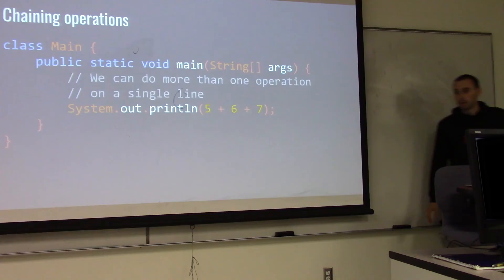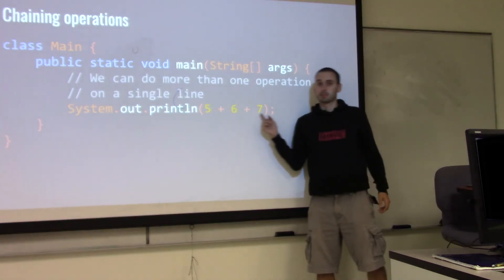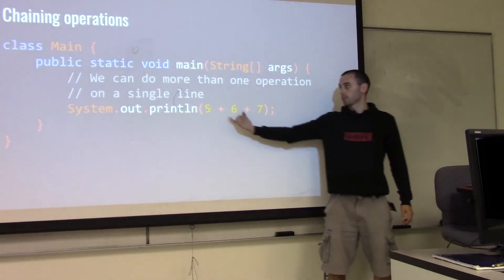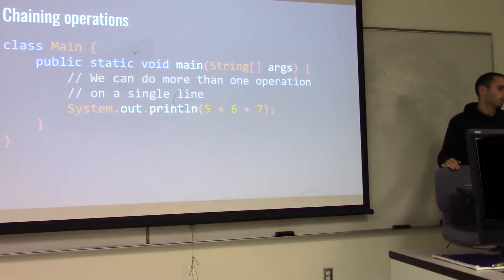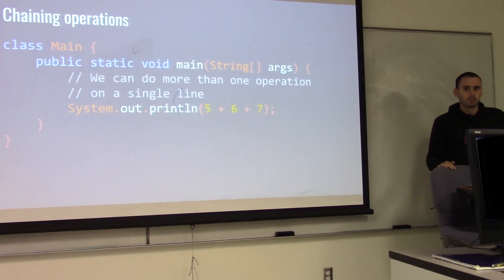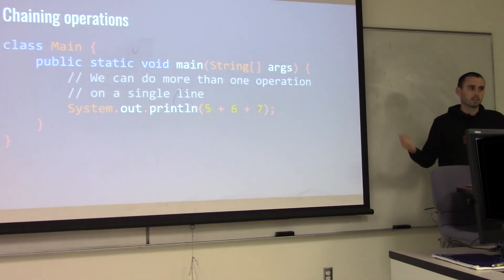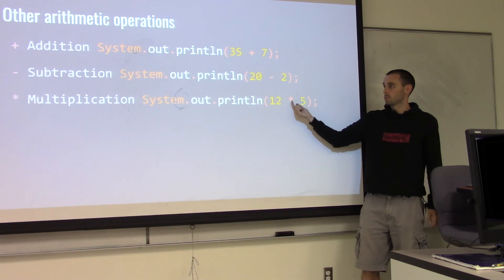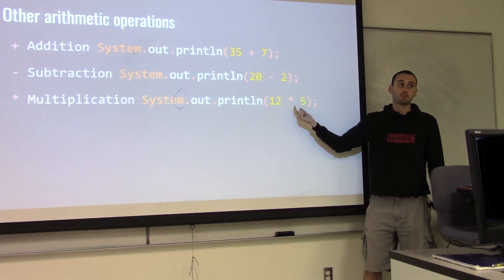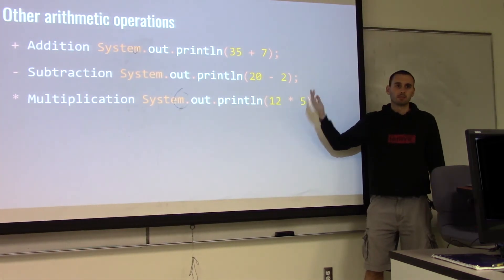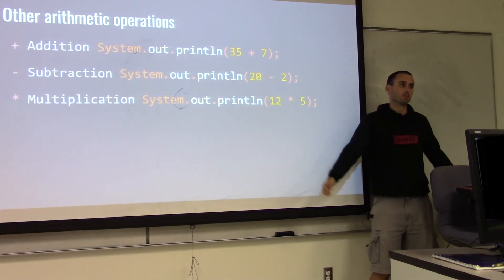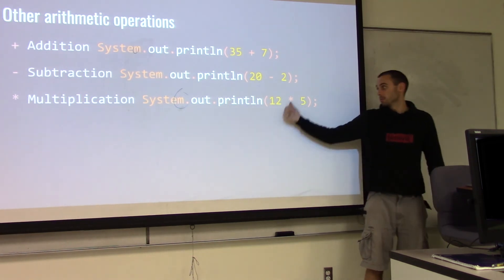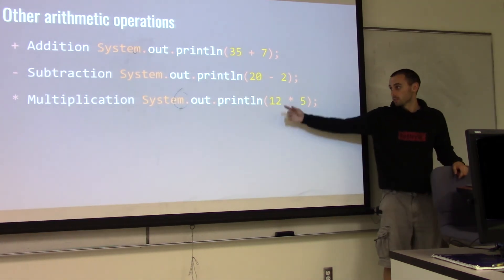In Lab 1.2, you can do things like 5 plus 6 plus 7 — it adds left to right. It follows regular mathematical order of operations, so 5 plus 2 times 7 will do 2 times 7 first. The operators are plus, minus, and the asterisk for multiplication — not an x, the asterisk. So 5 times 12 would print 60.